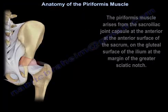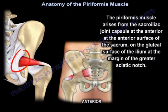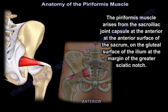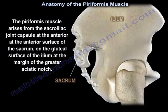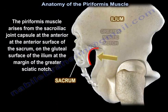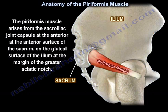The Piriformis Muscle arises from the sacroiliac joint capsule at the anterior surface of the sacrum and the gluteal surface of the ilium at the margin of the greater sciatic notch.